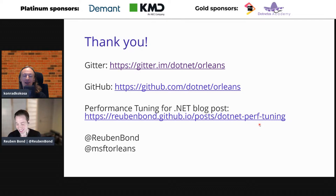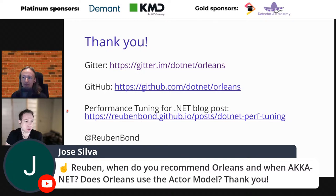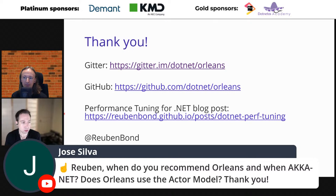Audience question: how would you compare Orleans to Akka? This really depends on a lot of things and isn't a question I can fairly answer briefly. Look at both and decide what works best for you. Generally, Orleans is more automated and abstracts a lot away, whereas Akka is a little more manual. Orleans is very .NET object-oriented with method calls; Akka has more of a message-passing paradigm. They're a bit different.